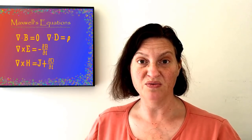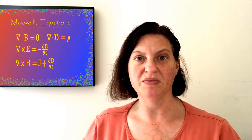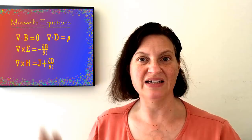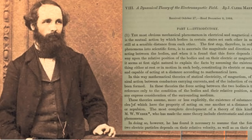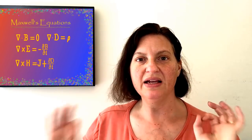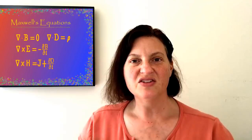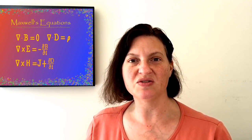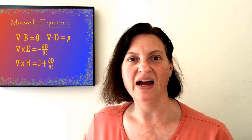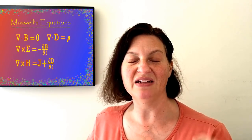Anyway, in 1865, Maxwell wrote a paper where he coined the term "fields" instead of Faraday's "lines of force." Maxwell excitedly wrote a friend that, quote, "Till I'm convinced to the contrary, I hold my new paper to be great guns." And he was right. In this paper, Maxwell claimed that Weber's results are, quote, "so nearly that of light that it seems we have a strong reason to conclude that light itself is an electromagnetic wave." To Maxwell, his paper with all of his equations was the same in substance as Faraday's ideas from 1846.